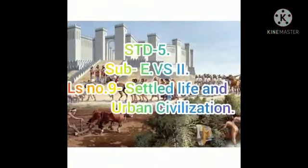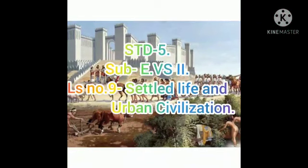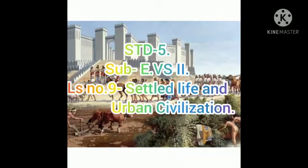Welcome dear students to online classes. Standard 5th subject EVS II, lesson number 9: Settled Life and Urban Civilization. What is meant by settled life? It means staying in one place. Urban means cities and towns. Civilization means developed life. Today we are going to start lesson number 9, Settled Life and Urban Civilization.